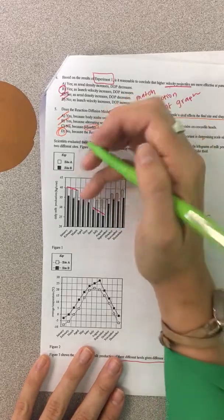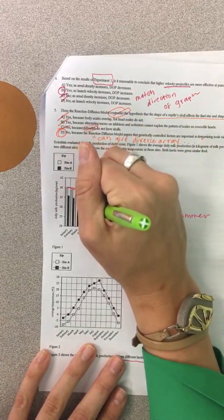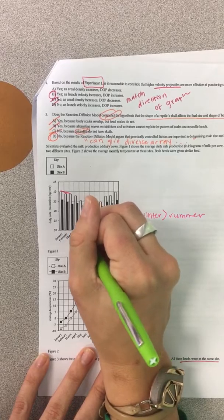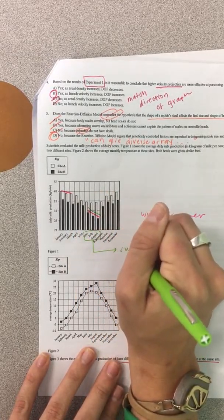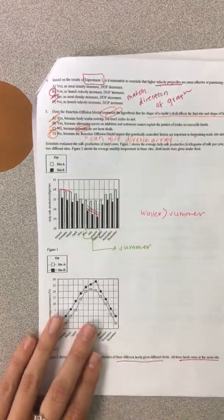Okay. Which one has the least amount of milk? So, the smallest numbers are right there. That's June, July, and August. What season is that? That is the summer. Okay. So, they produce the least amount of milk in the summer.